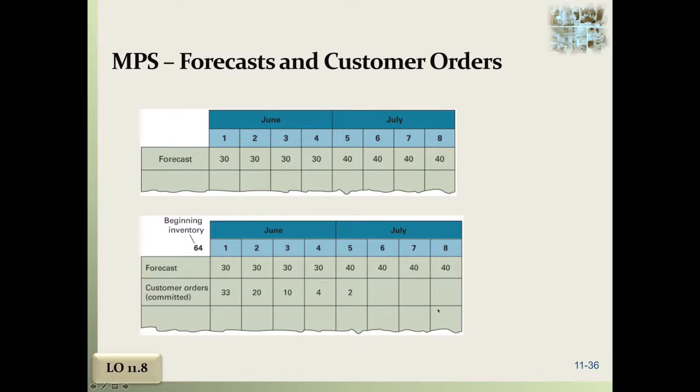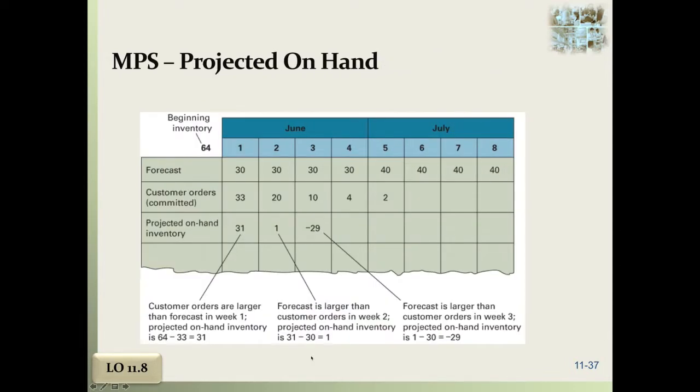Looking at forecasts and customer orders, this is looking at our beginning inventory 64, our forecast is 30, and we have 33 committed orders. You can see as we get further out, there's less definition in this process. This is what we're forecasting to have as we go. We have three over what we forecasted here, 10 under for the second period and 20 under for the third period right now. This is kind of our known variables.